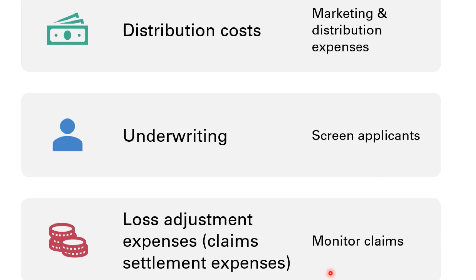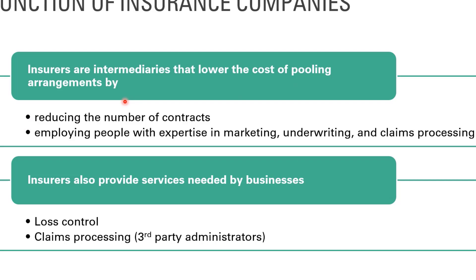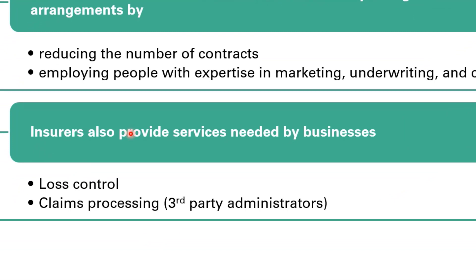Pooling arrangement is one of the basic characteristics of insurance companies. Insurance companies function as intermediaries that lower the cost of pooling arrangements by reducing the number of contracts and employing people with expertise in marketing, underwriting, and claims processing. Insurance companies also act as service providers for businesses, helping with loss control and processing claims.